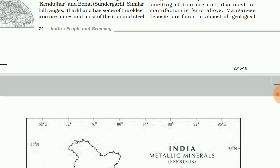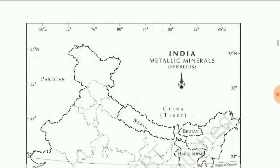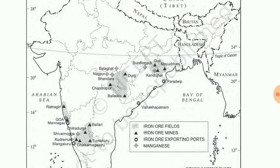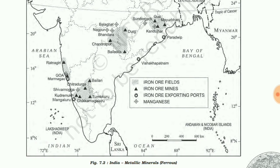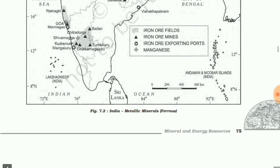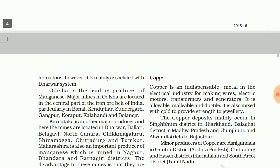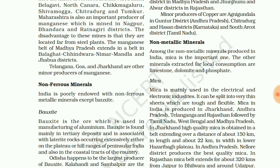Non-ferrous minerals: bauxite is used in manufacturing of aluminum and is found in tertiary deposits associated with laterite rocks — remember this, as it can be asked as a one-mark question. Non-metallic minerals: mica is used in electronic and electrical industries. It can be split into thin sheets which are strong and flexible, making it very useful. Distribution and uses will be discussed in the next video.